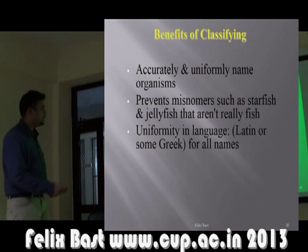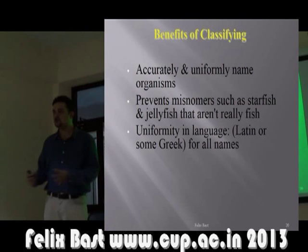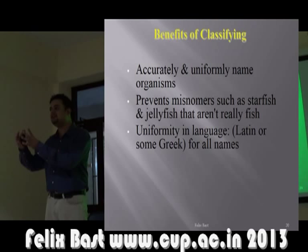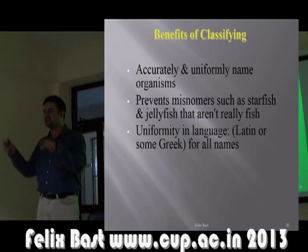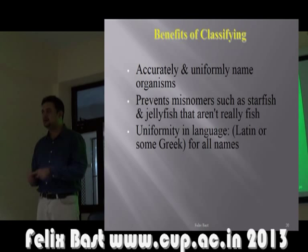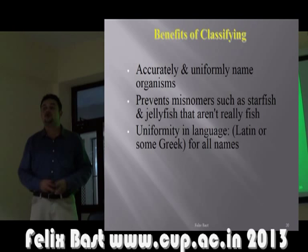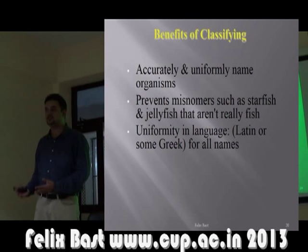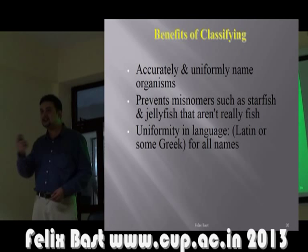Classification also prevents misnomers — words that suggest a wrong meaning. For example, 'starfish' is not a fish — it's an echinoderm. 'Jellyfish' is not a fish either — it's a cnidarian, a completely separate zoological group. Fish are vertebrates, while starfish and jellyfish belong to entirely different classifications.